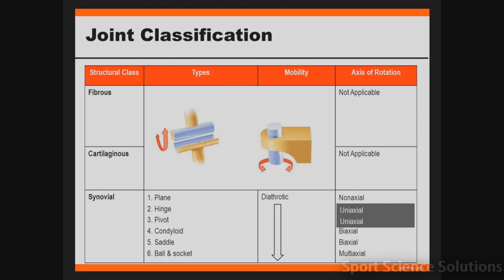The second type of axis of rotation is called a uniaxial joint, meaning rotating around a singular axis. Examples of uniaxial joints are both hinge and pivot joints. Taking the elbow as an example of a hinge joint, it can only flex and extend, so it's rotating around one axis. The radioulnar joint as a pivot joint can only pronate and supinate.